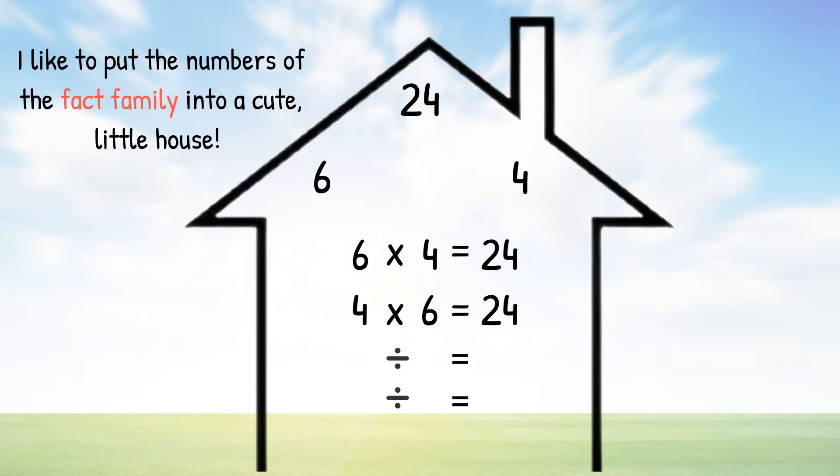To make your division facts, you always start with the largest number, the total. So for this fact family, it's going to be 24. And then you divide it by one of the smaller numbers to equal the other smaller number. 24 divided by 4 equals 6, and 24 divided by 6 equals 4.